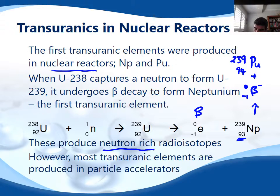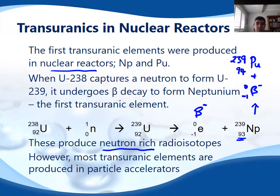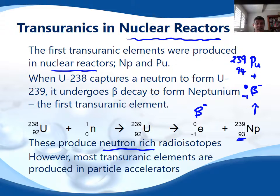These are neutron-rich radioisotopes. This method worked fine for the first couple, but once we started to try and form elements beyond plutonium we ran into problems with neutrons, so we needed to look for something different. Nuclear reactors are the first way to produce transuranic elements, and those primarily are neptunium and plutonium.